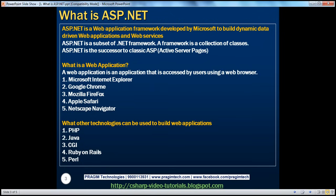The .NET framework can be used to do a variety of things. For example, I can build different types of applications using the .NET framework. I can build console applications, web applications, Windows applications, Windows services, etc. So ASP.NET is a subset of that wider .NET framework that can be used to build web applications and web services. If you're wondering what a framework is, a framework is nothing more than a collection of classes, in simple terms.